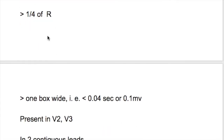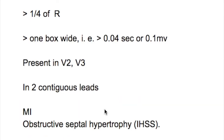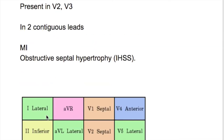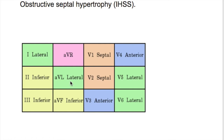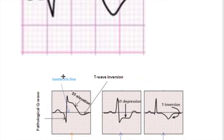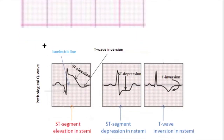A pathological Q wave is more than one fourth of the R wave height, more than one box wide (more than 0.04 seconds), or more than 0.1 millivolt. It is present in chest leads V2 and V3, and must be present in at least two contiguous leads — for example, leads I and aVL together, or leads II, III, and aVF, or V5 and V6.